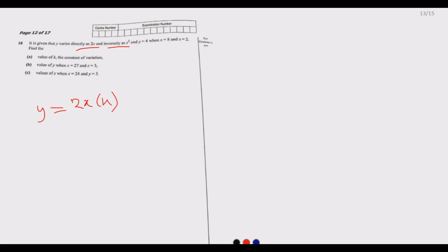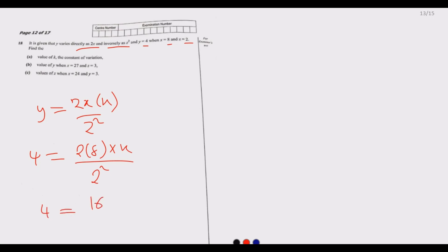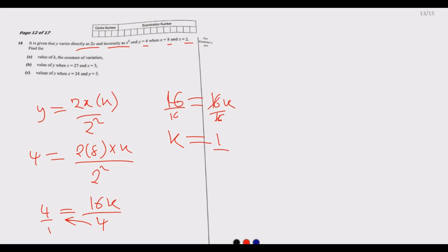Substituting the given values: 4 equals k times 2 times 8 over 2 squared, which gives 4 equals 16k over 4. Cross-multiplying, we get 16 equals 16k, so k equals 1. That answers part a.